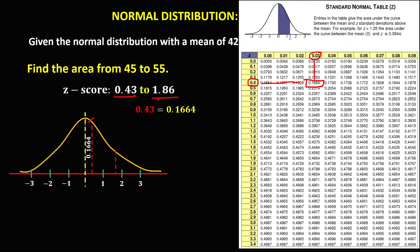For Z = 1.86, we look up row 1.8 and column 0.06. The area is 0.4686.